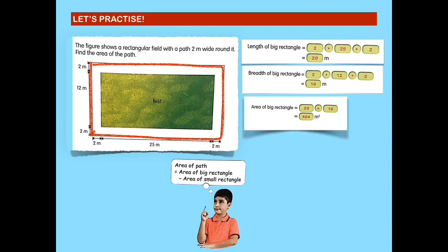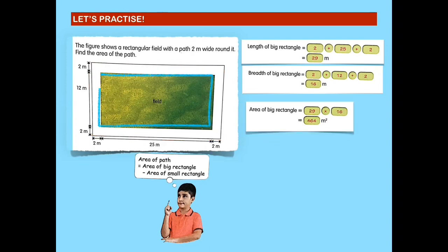Since we already know the length and breadth of the big rectangle, we can get its area. To get the area of the big rectangle, we multiply 29 meters by 16 meters, which is 464 square meters. Do not forget to show your working. Now let's find the area of the small rectangle, which is the rectangular field. The length of the small rectangle is 25 meters and its breadth is 12 meters. So, 25 multiplied by 12 gives us 300 square meters. The area of the small rectangle is 300 square meters.